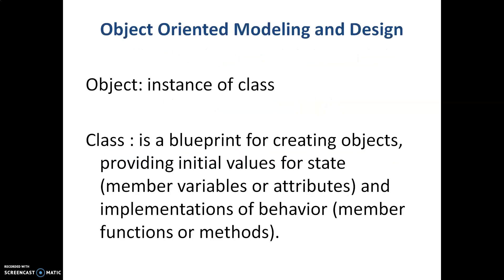First we need to understand what we mean by an object — we all know that it's an instance of a class. Now what do we mean by a class? It's a blueprint for creating objects, providing initial values for state, member variables, attributes, and implementations of behavior, member functions or methods. In practicality, a class is something where you can classify things.